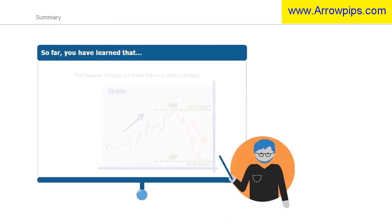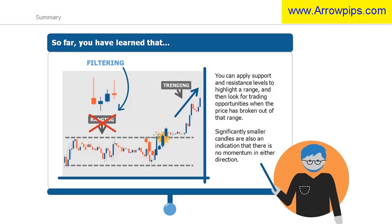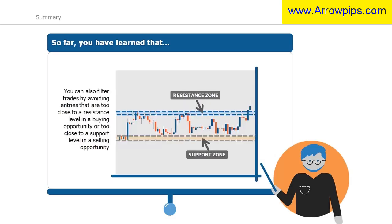You have learned that the beginner strategy is a trend-following trading strategy, and so there is a distinct advantage of being able to recognise when the market is not trending. You can apply filters — ways to avoid certain market conditions such as ranging markets — to decrease the amount of unprofitable trades. You can apply support and resistance levels to highlight a range, and then look for trading opportunities when the price has broken out of that range. Significantly smaller candles are also an indication that there is no momentum in either direction. You can also filter trades by avoiding entries that are too close to a resistance level in a buying opportunity, or too close to a support level in a selling opportunity.